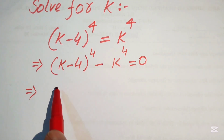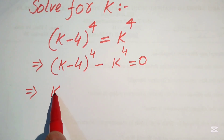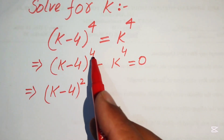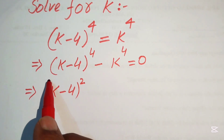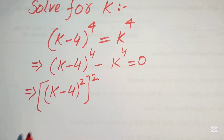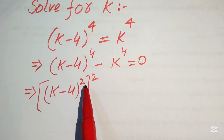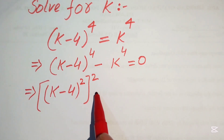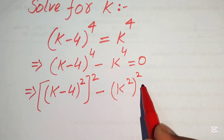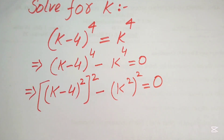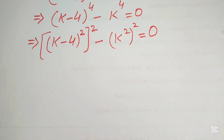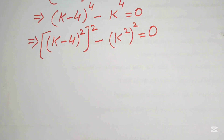We rewrite these two terms by breaking the exponent 4. We write (k − 4)⁴ as [(k − 4)²]² and k⁴ as [k²]², so the equation becomes [(k − 4)²]² − [k²]² = 0.